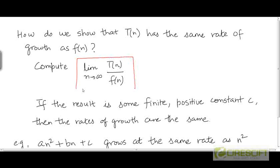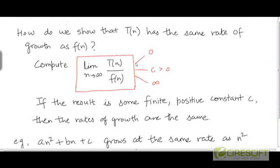But we are going to look at a simpler way to show these things. Suppose we compute the limit as n tends to infinity of the ratio of t to f. There are three possibilities: either this ratio could be 0, or it could be some positive constant c greater than 0, or it could be infinity. It can't be negative because t and f are non-negative functions. And of course there is a fourth possibility where there may not be a well-defined limit, but let's leave that aside for now.